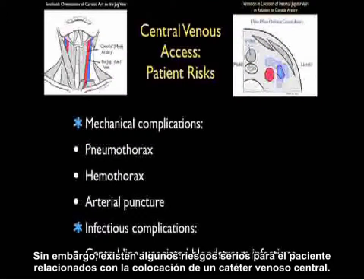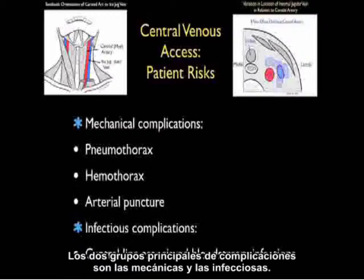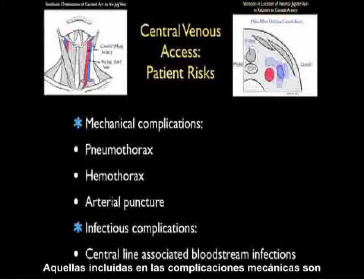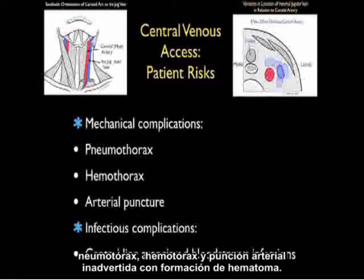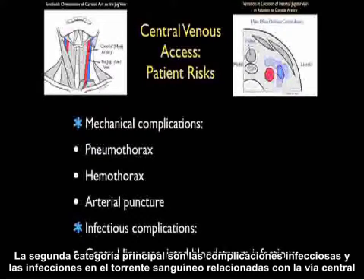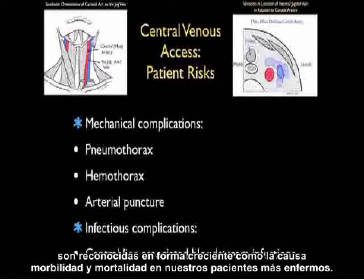However, there are some serious patient risks involved with placement of a central venous catheter. The two main groups of complications are mechanical and infectious. Mechanical complications include pneumothorax formation, hemothorax formation, and inadvertent arterial puncture with hematoma formation. Central line-associated bloodstream infections are an increasingly recognized cause of increased morbidity and mortality in our sickest patients.